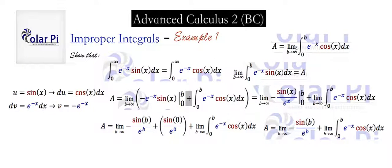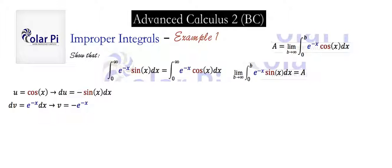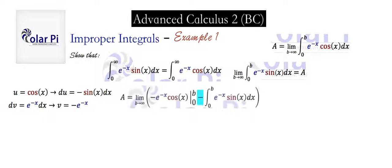We started with this and called it A, and right now A looks like the right-hand side. To find the value we have to keep going — integration by parts again. So u is going to be cos x, dv is the same as before: e to the minus x dx, so v is negative e to the minus x, and du is negative sine x dx.